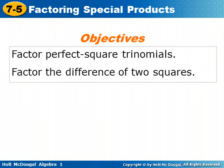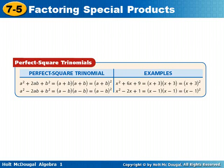Today's lesson is on factoring perfect square trinomials and factoring the difference of squares. If you remember when we learned the pattern, perfect square trinomials were a squared plus 2ab plus b squared. That was the trinomial form of the factored form a plus b times a plus b, or a plus b squared. So for instance, x squared plus 6x plus 9 was x plus 3 times x plus 3, or x plus 3 squared.